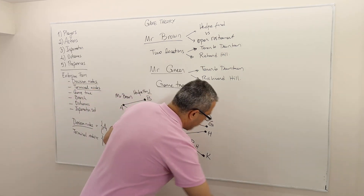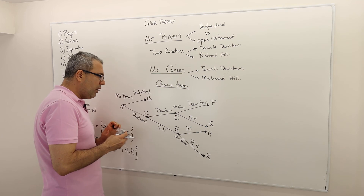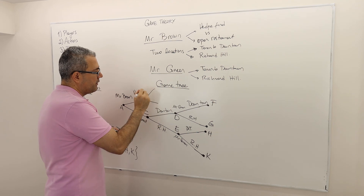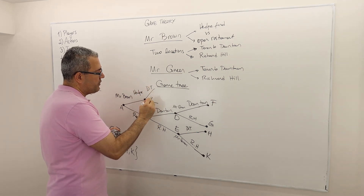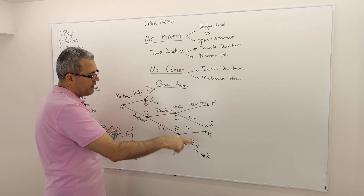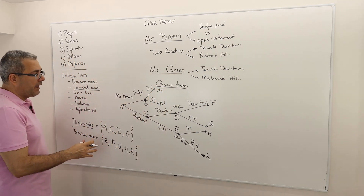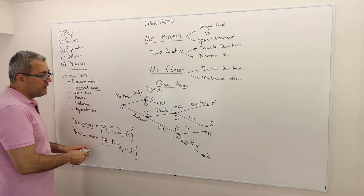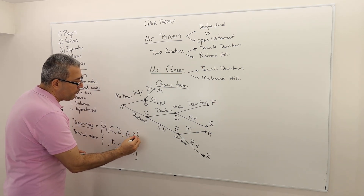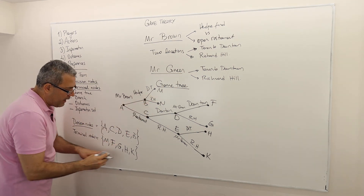Node B represents that Mr. Brown did not invest in a restaurant — he opened a hedge fund. But Mr. Green can still open a restaurant in downtown Toronto or Richmond Hill. So B is no longer a terminal node; it becomes a decision node for Mr. Green, and we get two more terminal nodes, M and N.